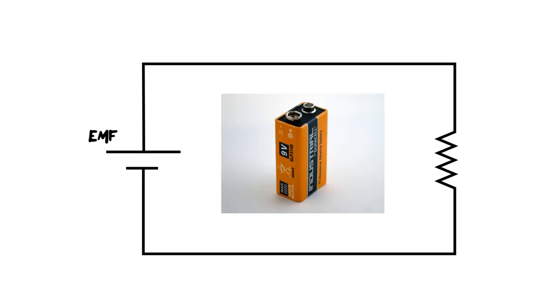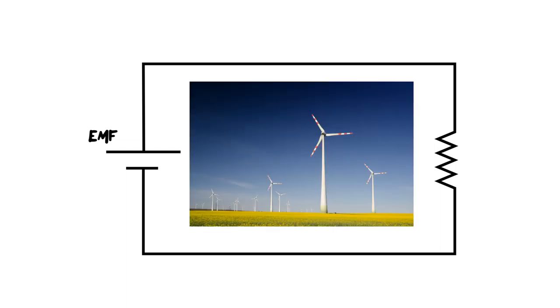A great example of this is the battery. We're taking chemical energy and converting it into electrical energy. Another example, a wind turbine. We're taking that mechanical energy of it spinning around and around, and we're converting it into electrical energy.